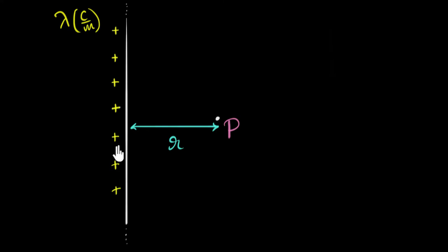So if lambda is say 10 coulombs per meter, it basically means every meter has 10 coulombs of charge. So let's say we know the charge density. Every meter has lambda coulombs of charge, that's given to us.